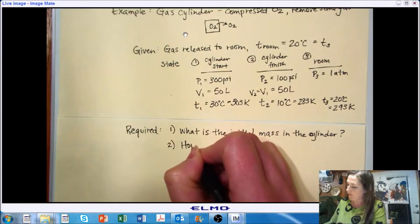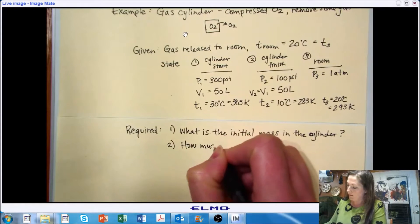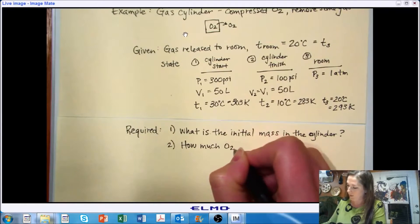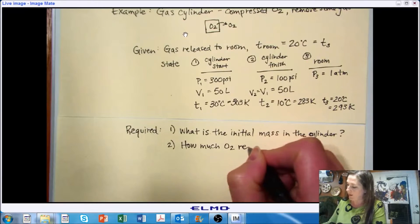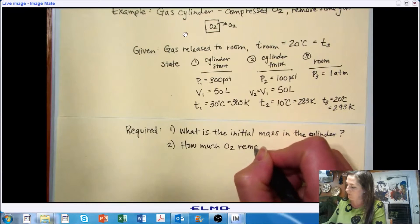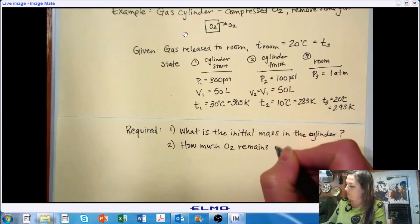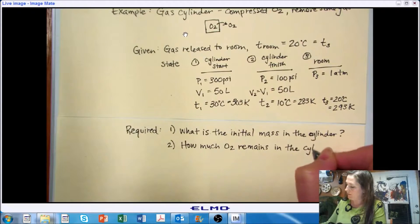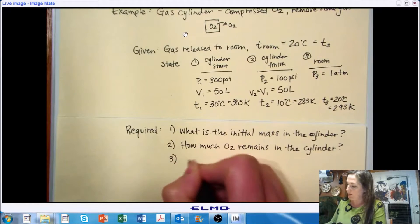Second thing, how much remains after we allow, after we finish releasing? And then the third, how much did we release?